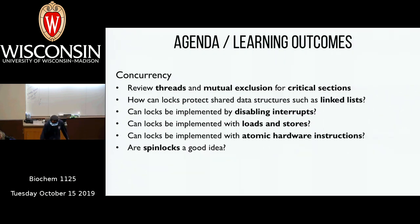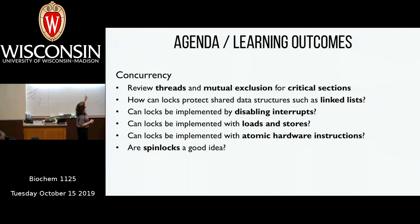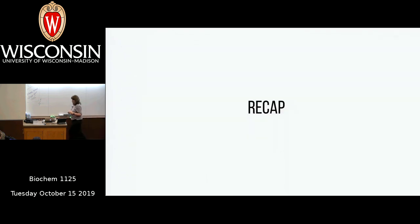Today we're going to continue talking about concurrency. We'll go over a different example than incrementing a global balance variable to see why we might need mutual exclusion across multiple threads. Then we'll look at different ways of implementing locks — by disabling interrupts (a bad idea), using just loads and stores (also a bad idea), and finally the implementation that works: using atomic hardware instructions like test-and-set.